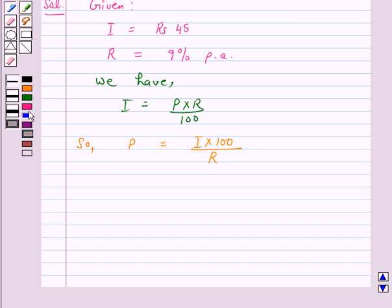So, we have principal equals Rs. 45 into 100 upon 9% per annum. So, on cancellation, we have, therefore principal equals Rs. 500.